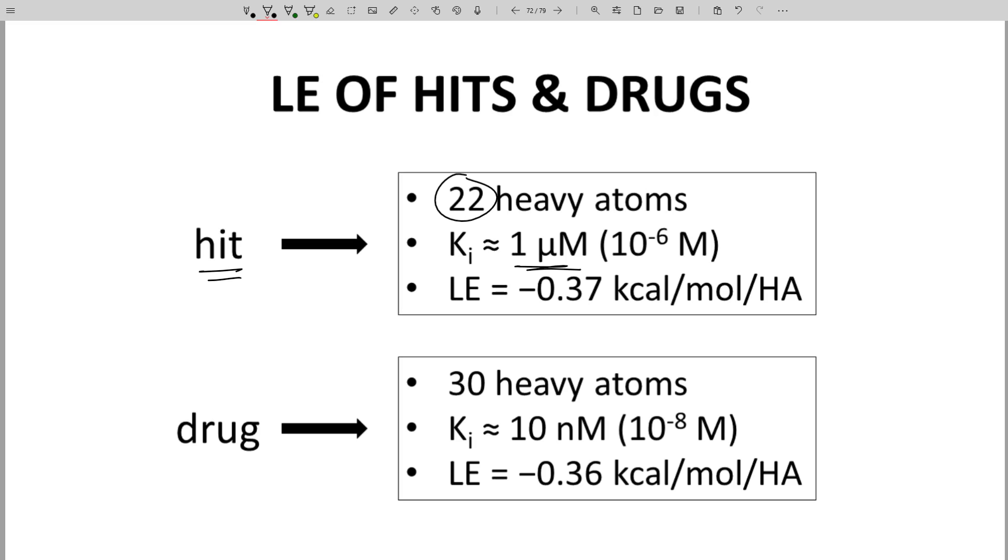How about a typical drug? Drugs have a potency of about 10 nanomolar and around 30 heavy atoms. That gives a ligand efficiency of minus 0.36 kcals per mole per heavy atom.